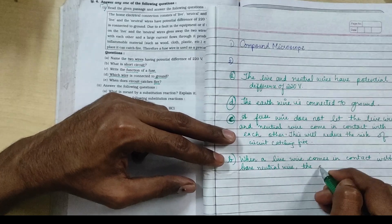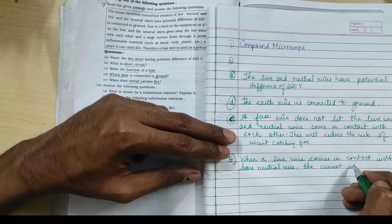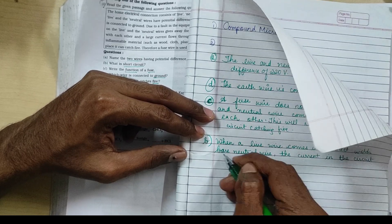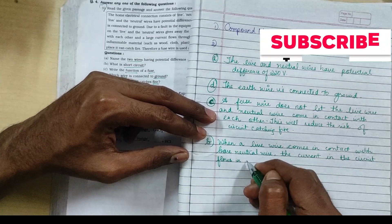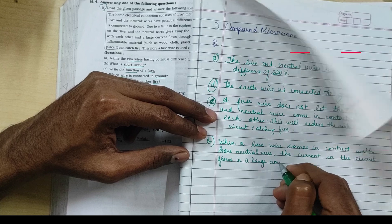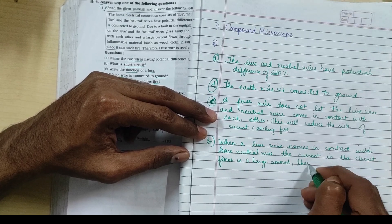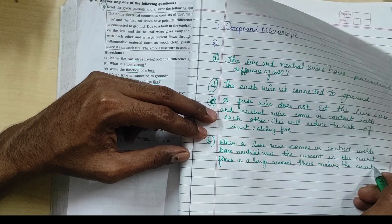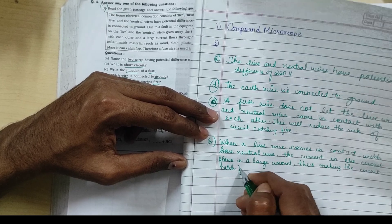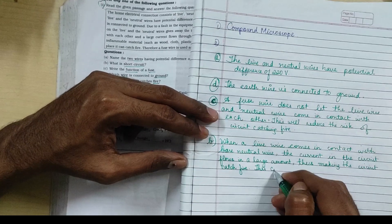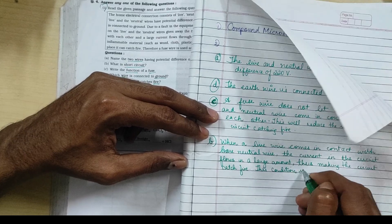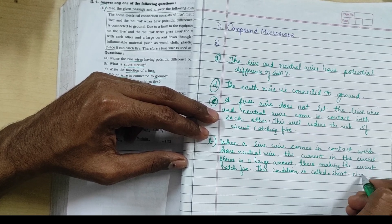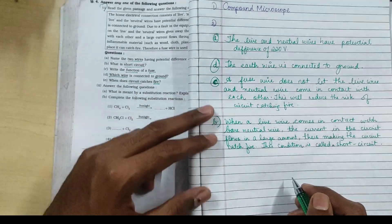When a live wire comes in contact with the bare neutral wire, the current in the circuit flows in a large amount, thus making the circuit catch fire. This condition is called a short circuit.